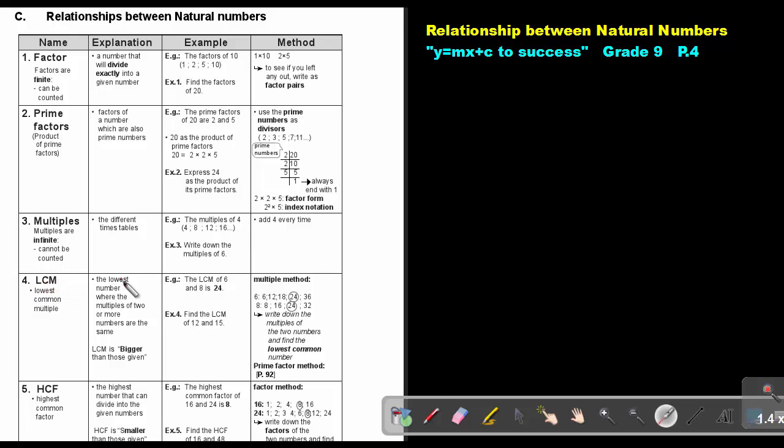Lowest common multiple. The lowest number where the multiples of 2 or more numbers are the same. Now the easy method is just to make use of multiples. That M stands for multiples. So take 6 and take 8 and write down the multiples. So 6, 12, 18, 24, 36. Write down the multiples of 8. 8, 16, 24, 32. But now, that L stands for the lowest. So what is the lowest common one? That will be 24. There will still be more, but the lowest one will be 24. So write down the multiples of the two numbers and find the lowest common number.